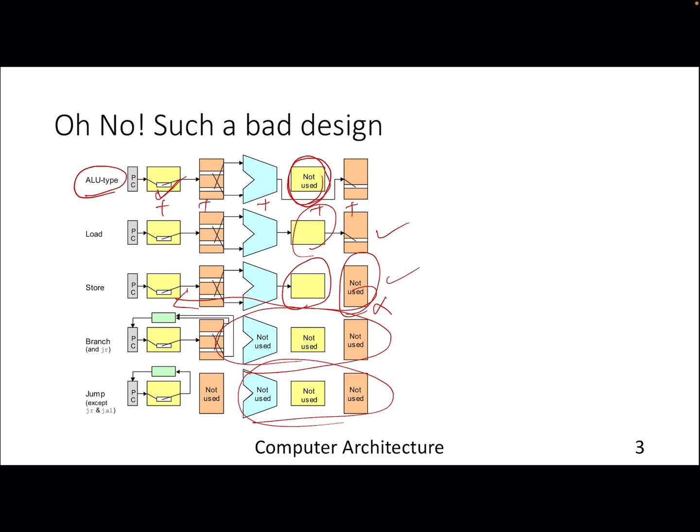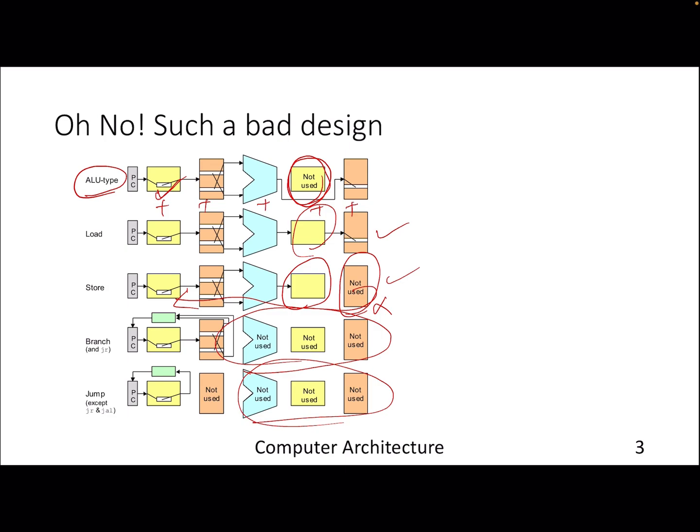Overall, this is trying to find out what exactly the worst case possible delay is that any instruction can go through, and based on that we will define our clock cycle time. For obvious reasons, it's not practical. So the notion of multi-cycle is: